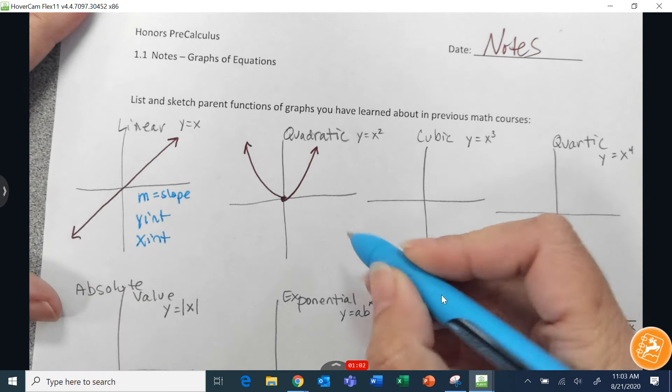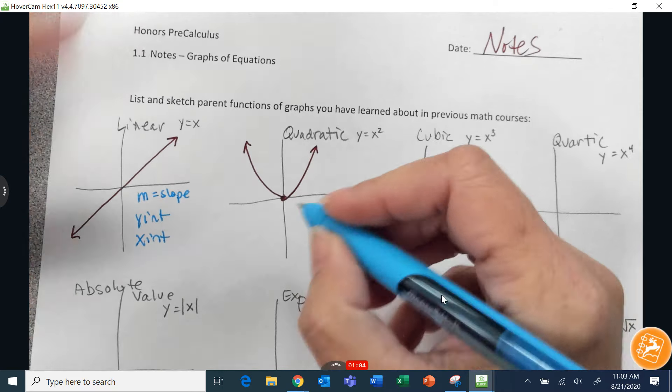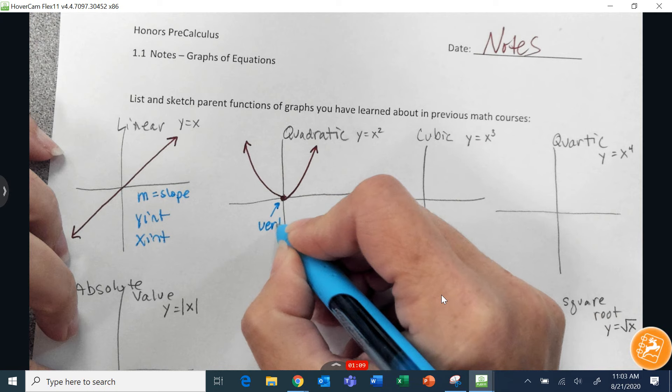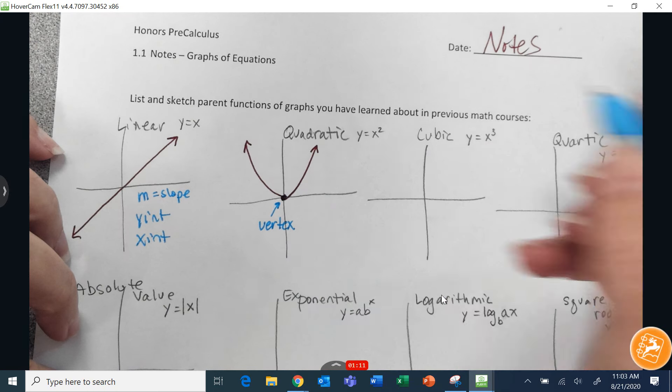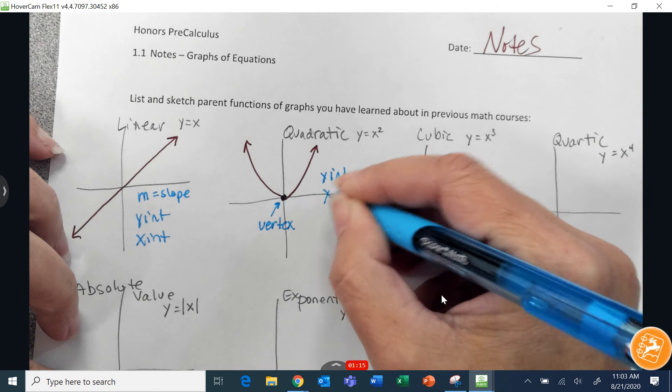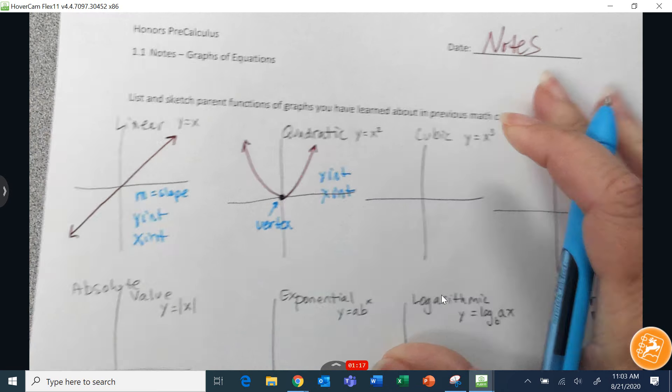When we talk about quadratic, there isn't a slope for quadratic. We would definitely find the vertex, which is that point in the middle. You're usually asked to find the y-intercept and the x-intercept. It could be more than one.